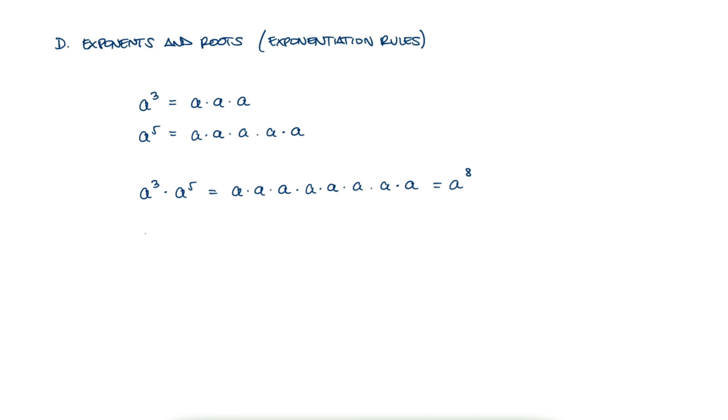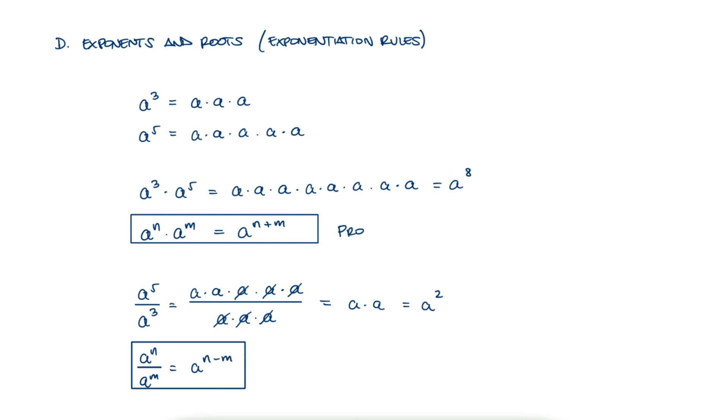This means that we can add exponents when the same base is found in a multiplication. And in the same manner, if we divide a to the 5 by a to the 3, it means that we can subtract exponents when the same base is found in the division. These are known as the product and the quotient rule for exponents.